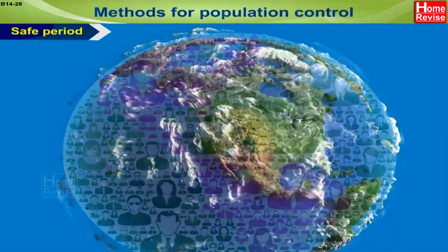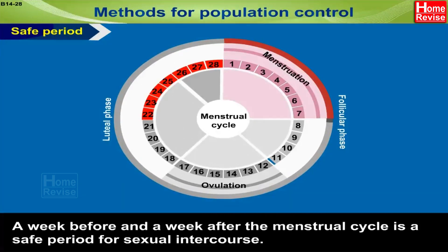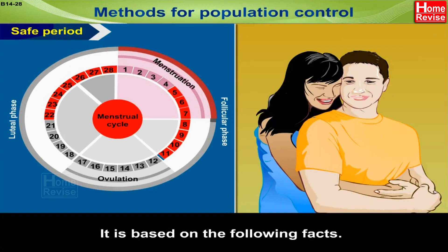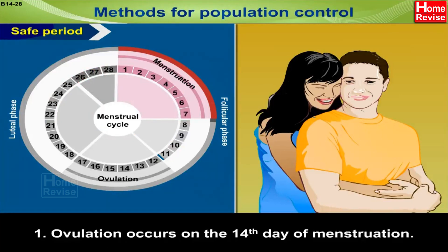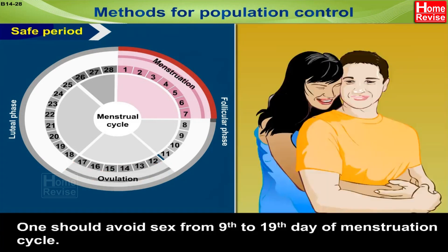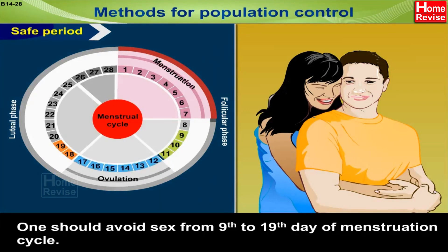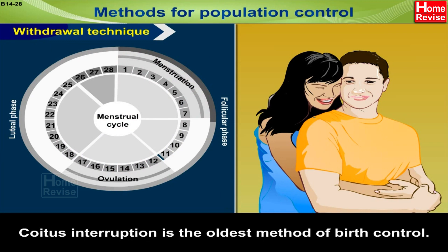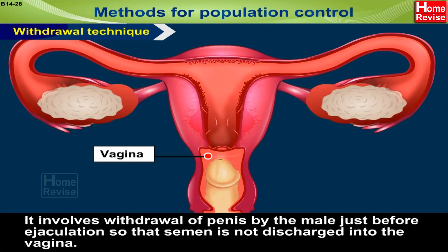Methods for population control — Safe period: A week before and a week after the menstrual cycle is a safe period for sexual intercourse, based on the following facts: ovulation occurs on the 14th day of menstruation; the ovum survives for about 2 days; one should avoid sex from the 9th to 19th day of the menstruation cycle. Withdrawal technique (coitus interruptus) is the oldest method of birth control — it involves withdrawal of the penis by the male just before ejaculation, so that semen is not discharged into the vagina.